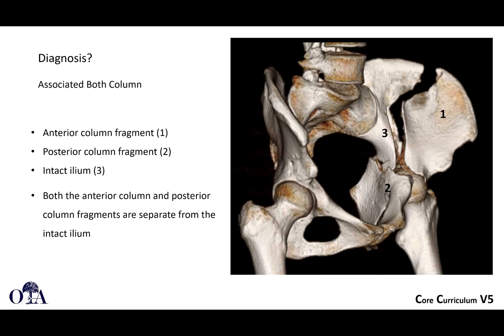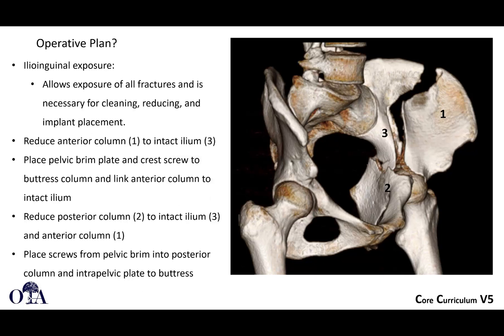The ilioinguinal approach is a very commonly used approach for the classic associated both-column fracture pattern. It allows exposure of all fracture lines — necessary to get exposure, clean out the fracture sites, and place implants. One strategy is working from outside in: if you can get the iliac wing fragment reduced to the intact ilium posteriorly as your constant fragment, that's a good start. You can then place the pelvic brim plate and crest screw to buttress the column and link the anterior column to the intact ilium.